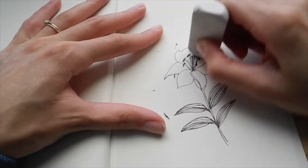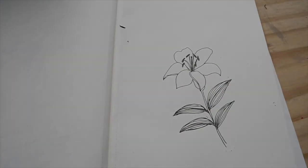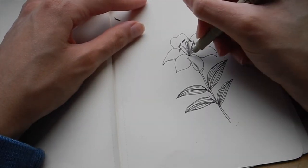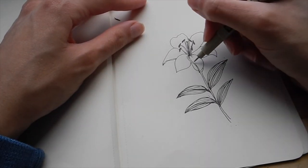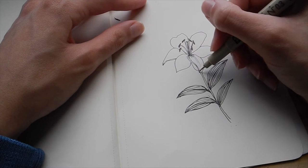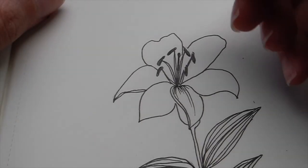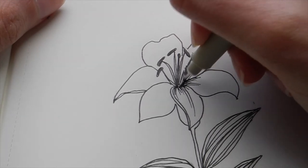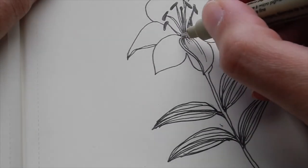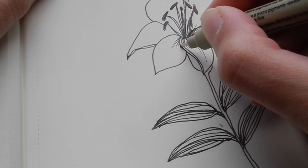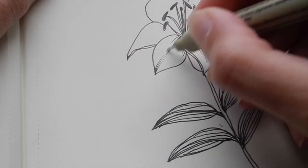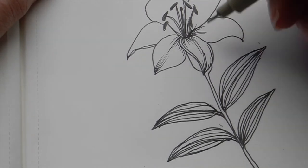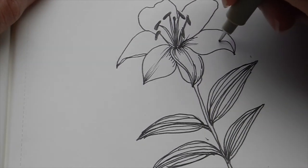So I'm going to erase all of those pencil marks. It's going to look a lot cleaner, a lot less confusing for when you add in your details and shading. The center is going to be dark because those petals are dipping into the middle where the stamen are coming out. And I'm just using some curved lines to create shape like this.